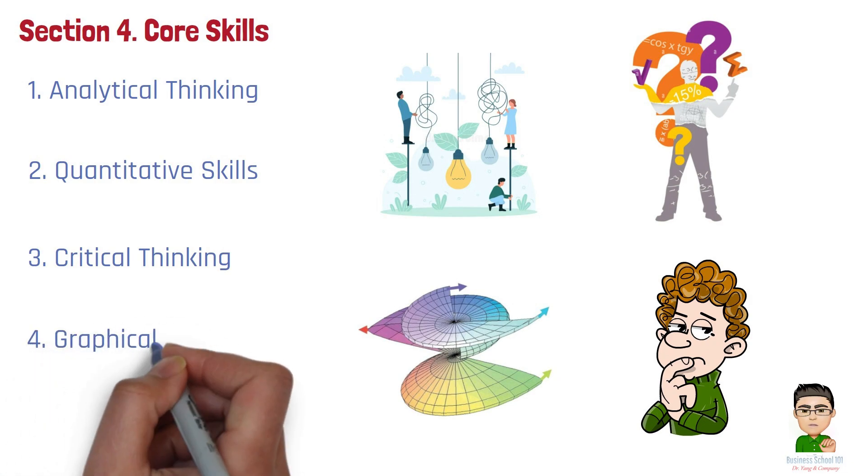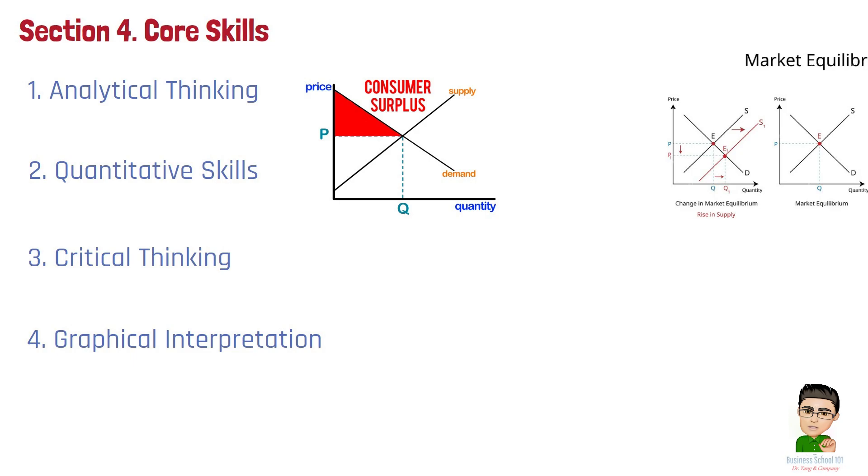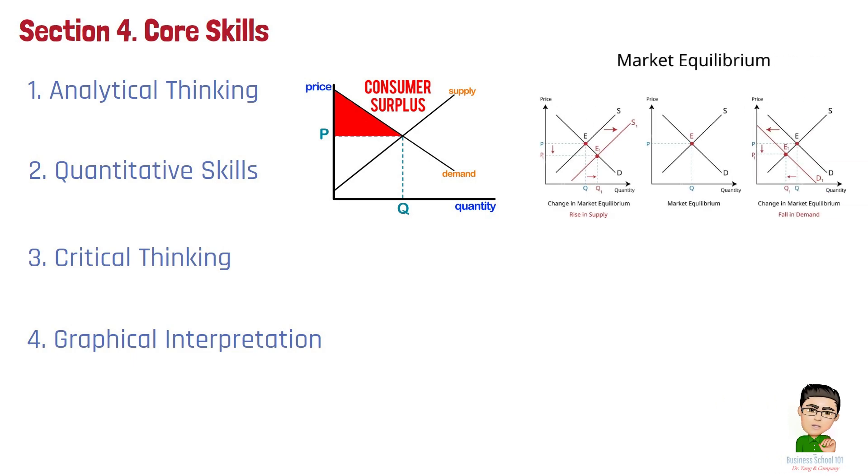Number 4. Graphical Interpretation. Microeconomics relies heavily on graphical models to illustrate concepts such as supply and demand, consumer surplus, and market equilibrium. Being able to interpret and draw graphs accurately is vital for visualizing economic relationships and changes in the market.